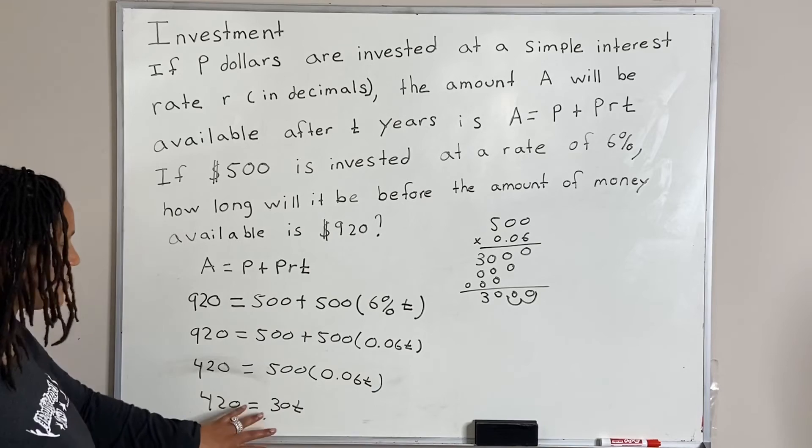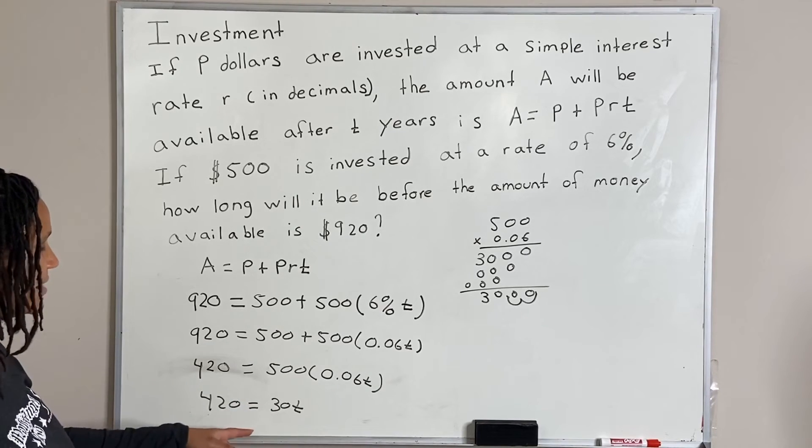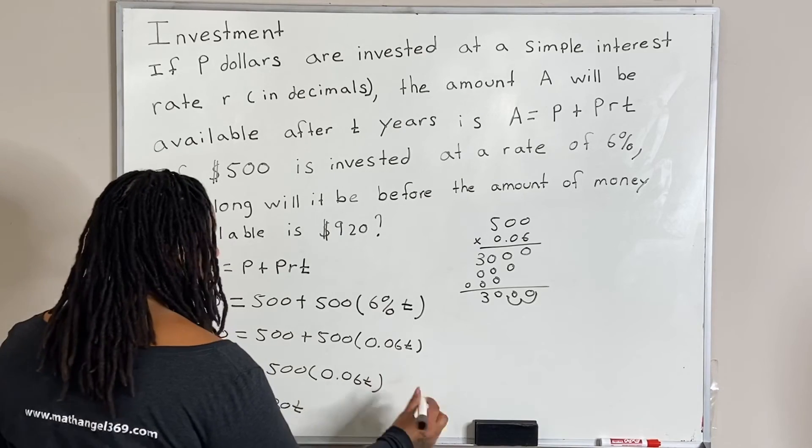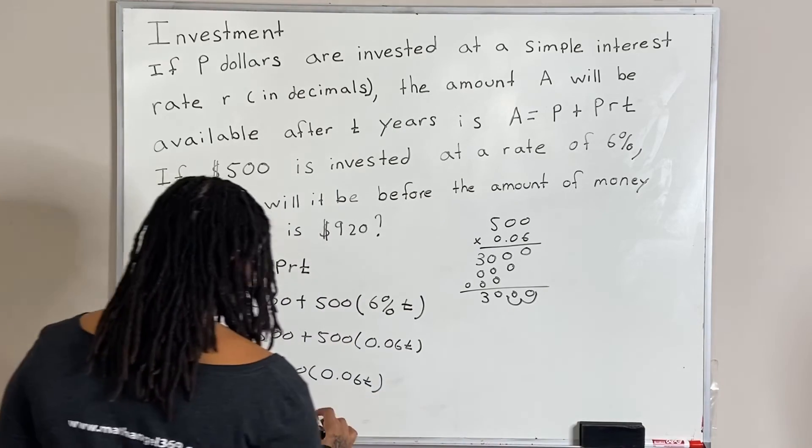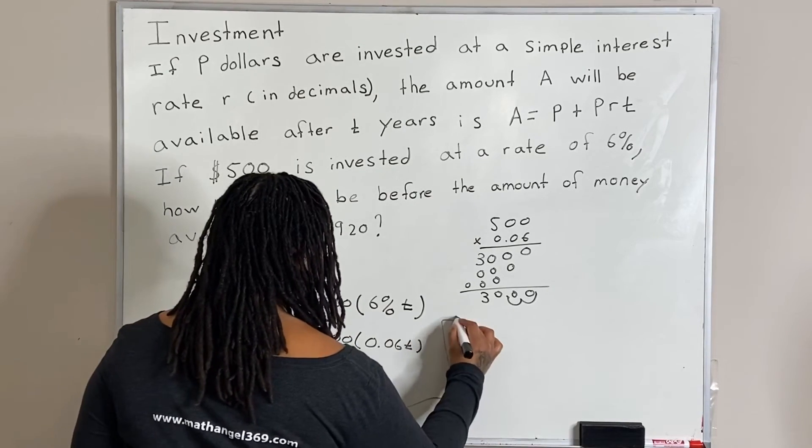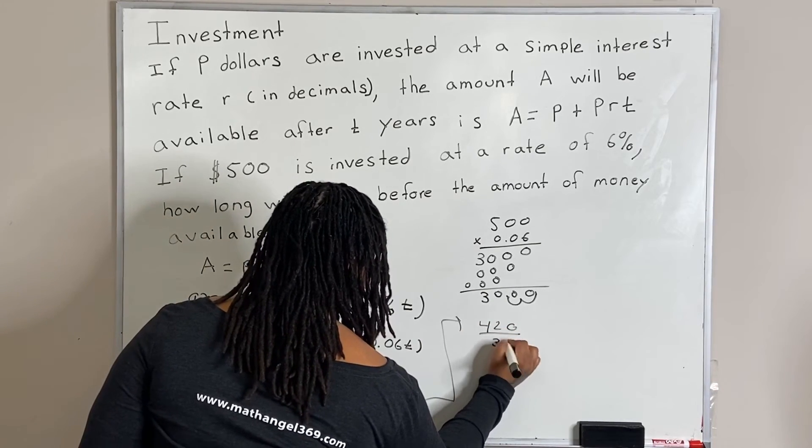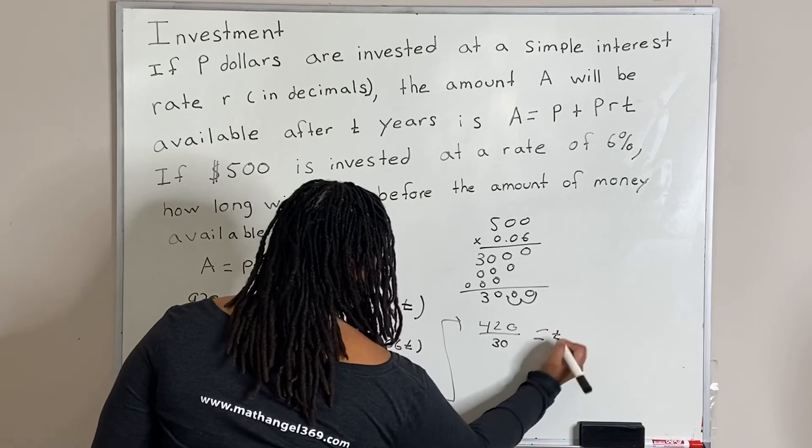And now we are just going to divide both sides by 30. So we get, let's bring this over here. So we get 420 divided by 30 is equal to T.